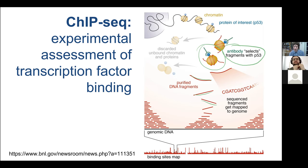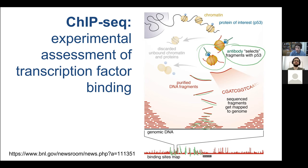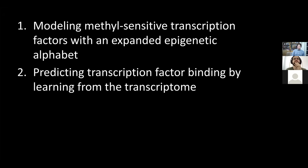I love high-throughput sequencing because you can use it as a readout for various biochemical or biophysical properties of the genome in a population of cells or individual cells. The snATAC-seq assay Nicole talked about is one example — using sequencing as a readout for open chromatin. In ChIP-seq, we look at where transcription factors, DNA-binding proteins, or histone modifications are by where the ends of DNA fragments map back to the genome.